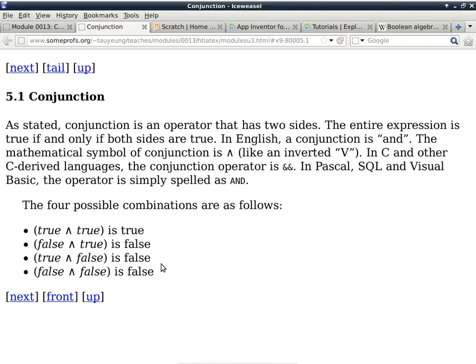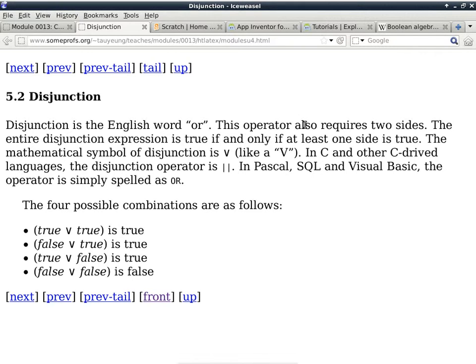In logic, we use the word disjunction to represent the English word 'or'. In mathematics, it looks like a V. In C and other C-derived languages, it's double vertical bar, not a single vertical bar. A single vertical bar is called a bitwise OR instead of a logical OR. It does something that is related to a logical OR but not exactly the same.